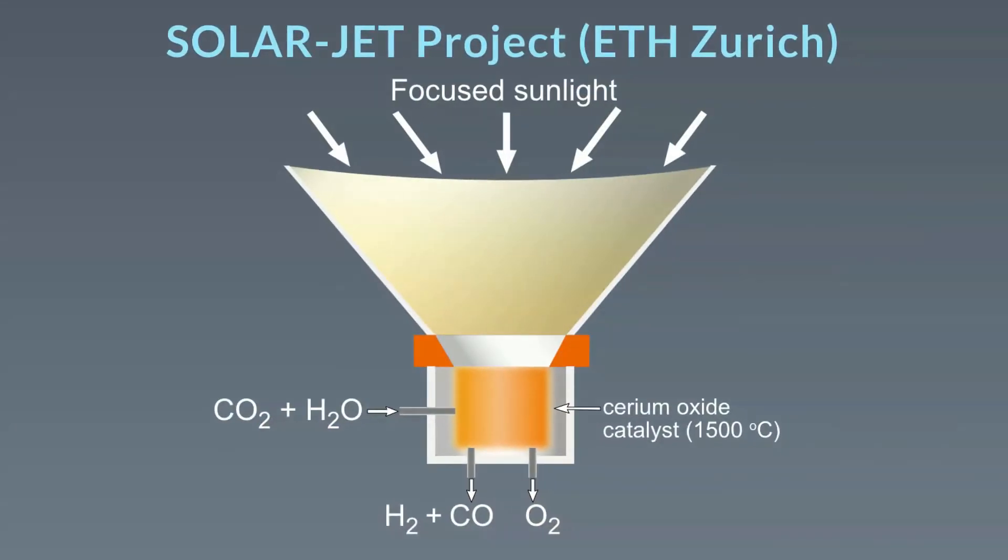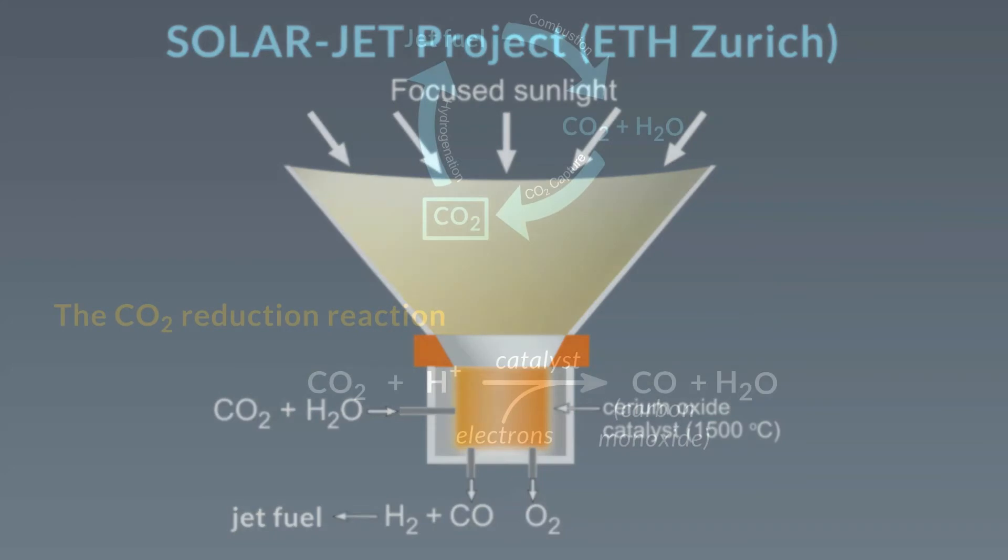Solar jet takes advantage of solar energy to convert carbon dioxide and water to carbon monoxide and hydrogen. In a second step, molecular oxygen is generated. Their device focuses sunlight on a cerium oxide catalyst, heating it to 1500 degrees Celsius. The carbon monoxide and hydrogen can then be converted to liquid fuels using the FT process.